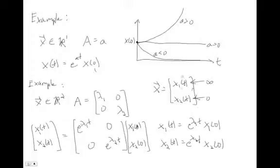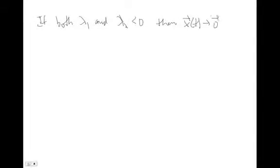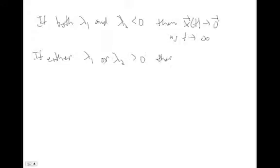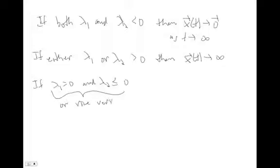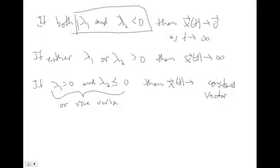However, if either component goes to infinity, the whole vector goes to infinity. So: if both λ₁ and λ₂ are less than zero, the x vector goes to the zero vector as t→∞ (both stable, both decaying). If either λ₁ or λ₂ is greater than zero, x(t) goes to infinity. If one eigenvalue equals zero and the other is less than or equal to zero, x(t) goes to a constant vector — neither growing nor fully decaying.